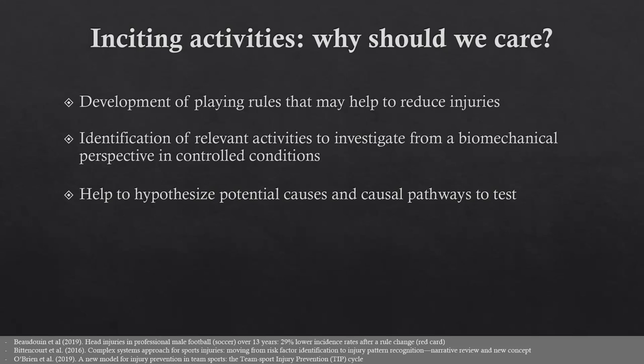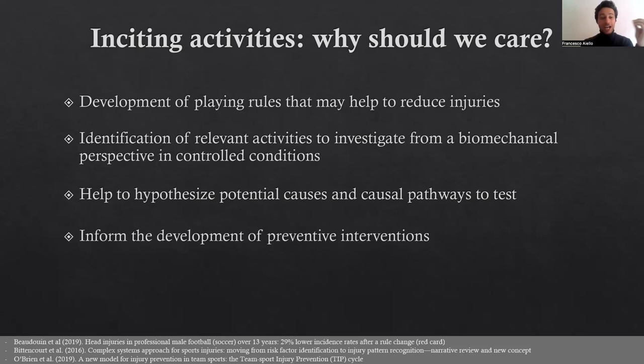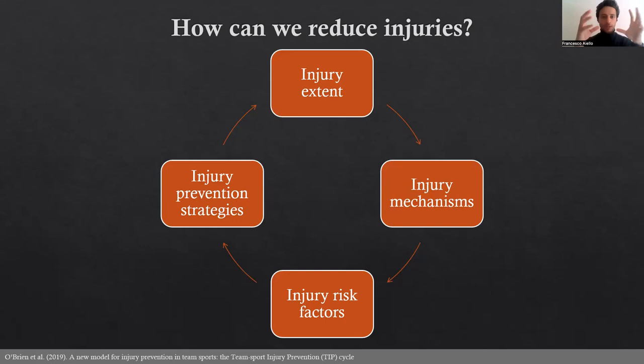Last, but absolutely not least, is that understanding how injuries occur is one of the key steps required to develop injury prevention strategies. To develop injury prevention strategies, we need an understanding of the extent of injury, an understanding of the mechanisms of how injuries occur, an understanding of the risk factors, and then we can use all this information to try to develop injury prevention strategies that need to be tested and refined accordingly.